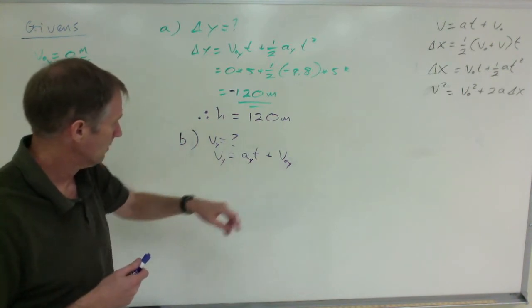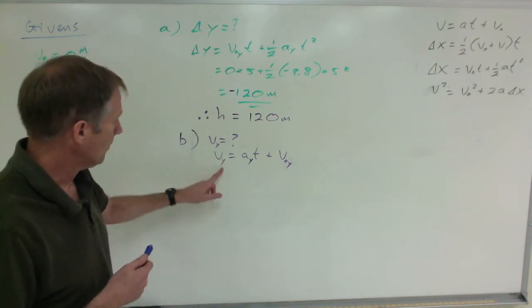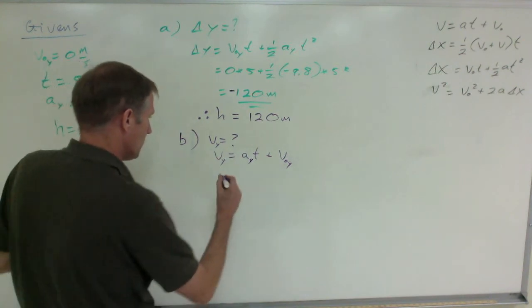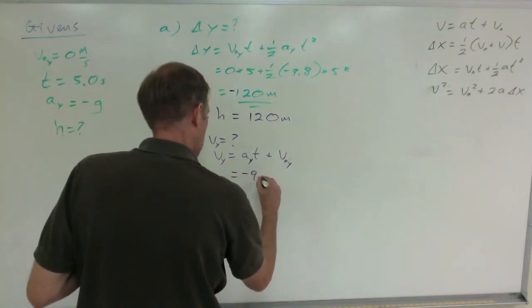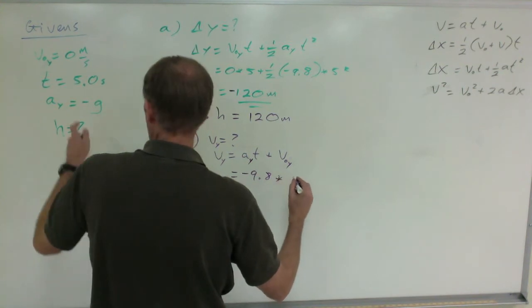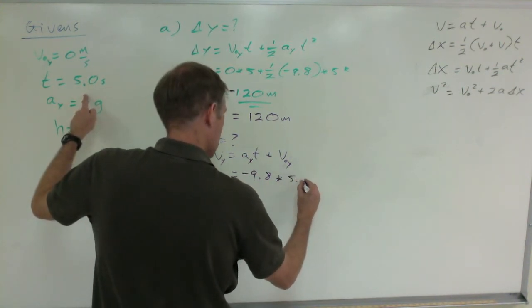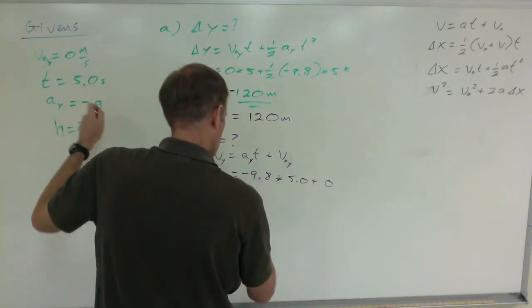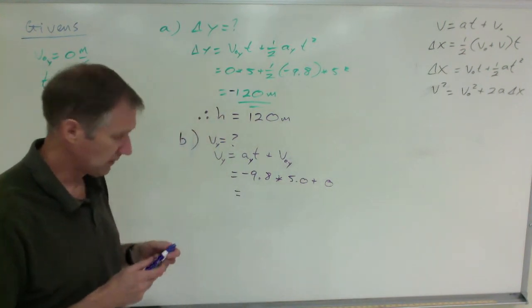Negative 9.8 times 5 plus 0 is going to be negative 49 meters per second.